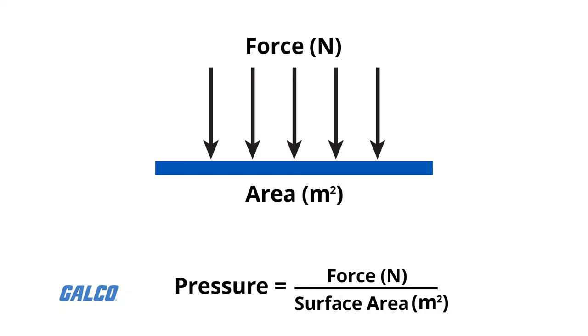A pressure sensor is a device for pressure measurement of gases or liquids. Pressure is defined as the force applied by a liquid or gas against a surface, and is generally expressed in terms of force per unit area.